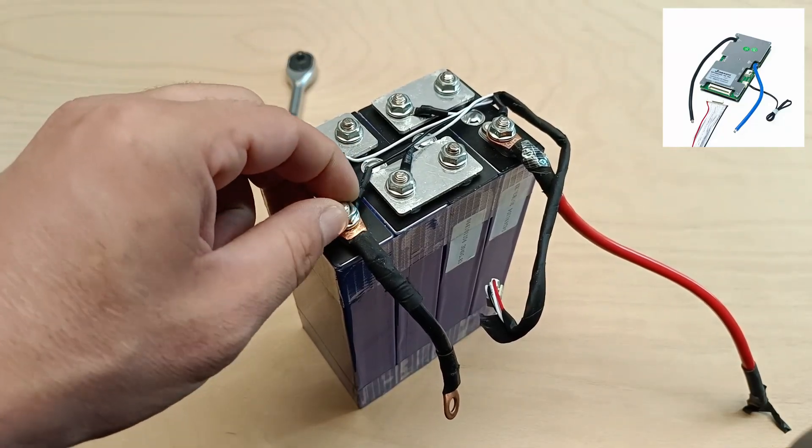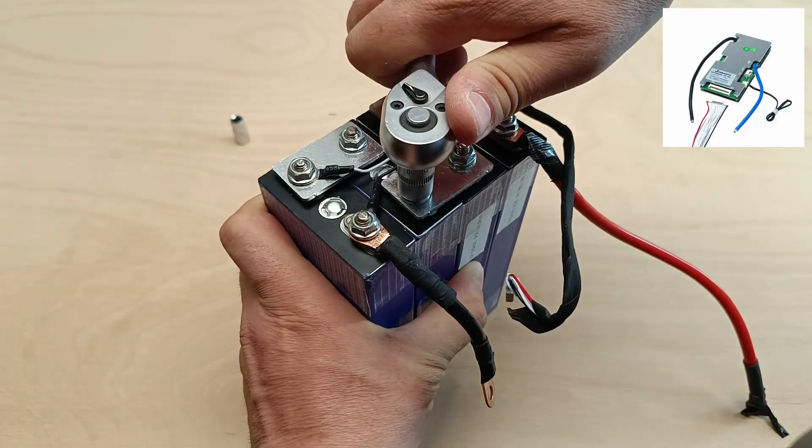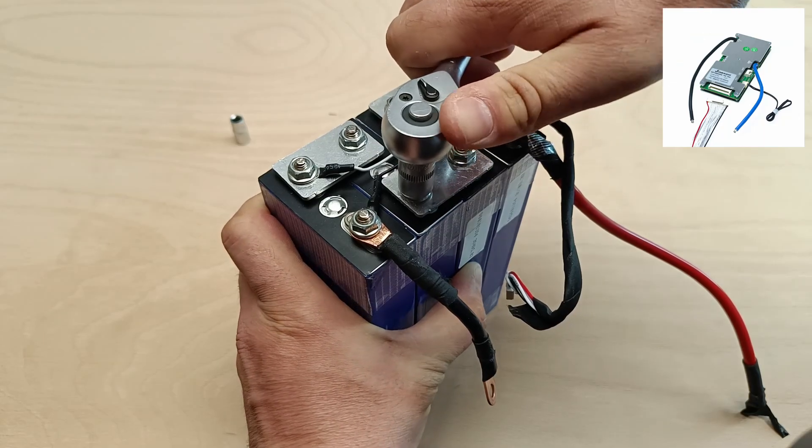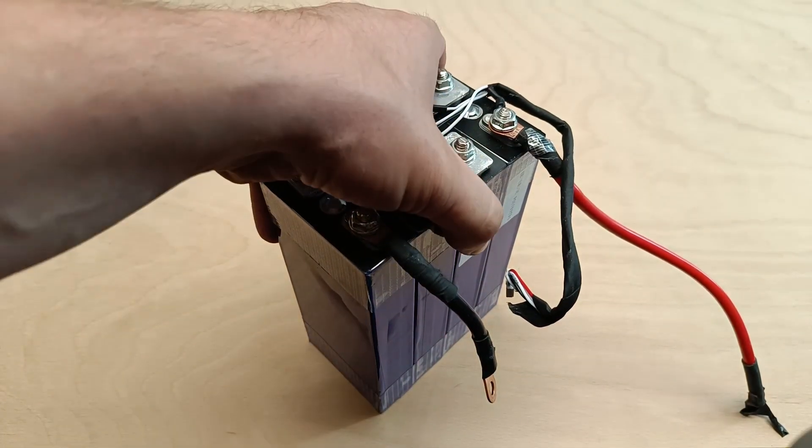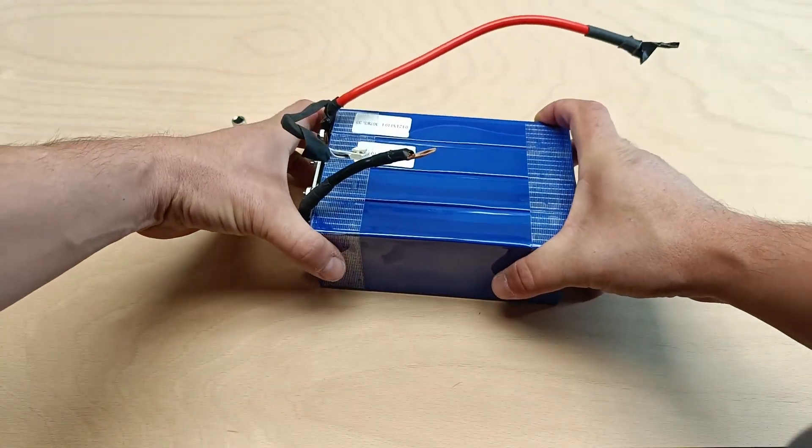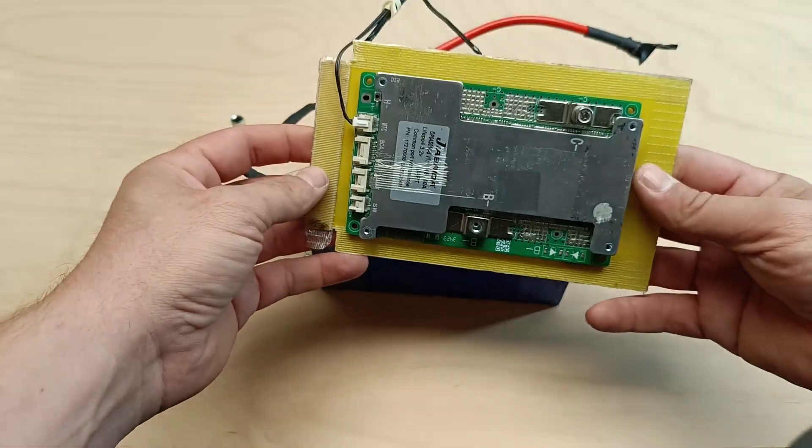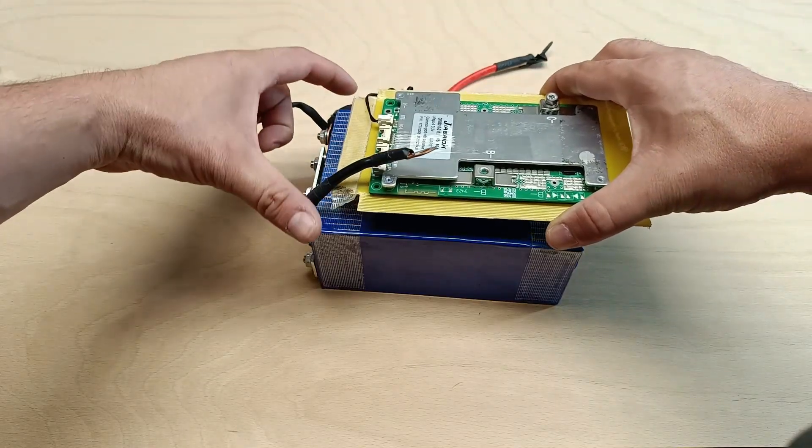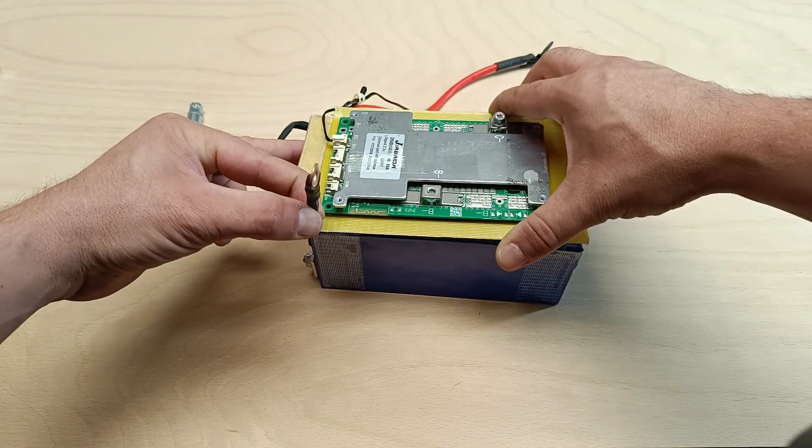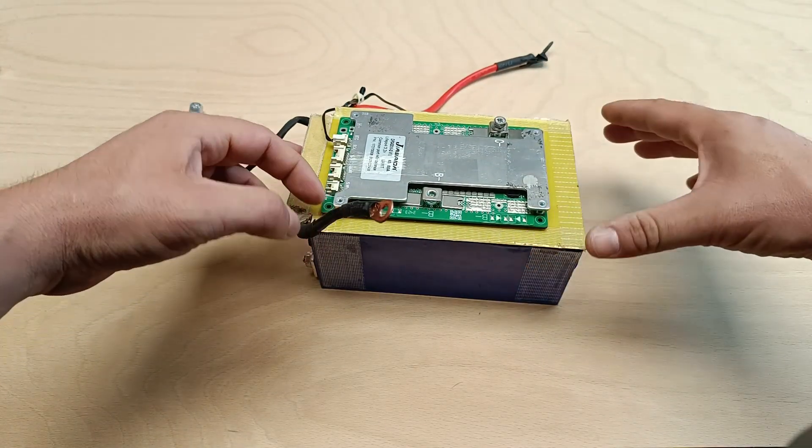It can also manage higher current peaks safely with built-in thermal protection and short circuit protection. It ensures the battery operates securely under all conditions. Now let's start assembling. First, we arrange the battery cells.